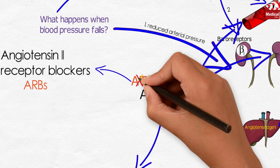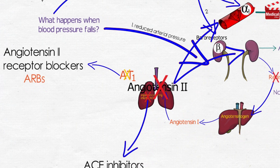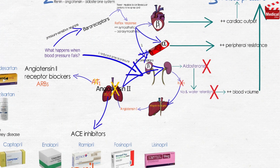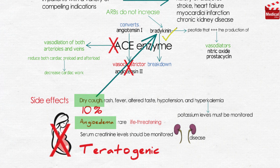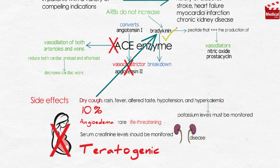These drugs block the AT1 receptors, inhibiting their activation by angiotensin-2. Similar to ACE inhibitors, they produce arteriolar and venous dilation and block aldosterone secretion, thus lowering blood pressure and decreasing salt and water retention. However, they do not increase bradykinin levels, so they are less likely to produce dry cough and angioedema. Other adverse effects are similar to those of ACE inhibitors, and they are also teratogenic. These agents should not be combined with ACE inhibitors due to their similarities.